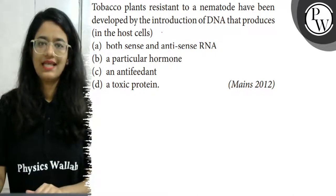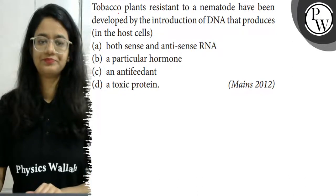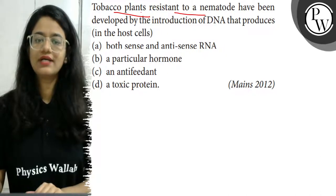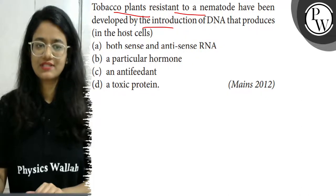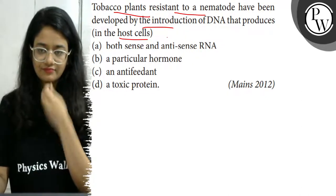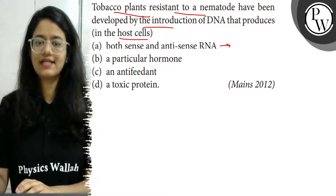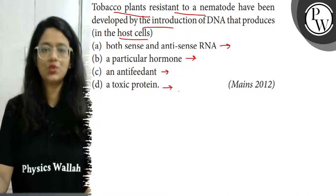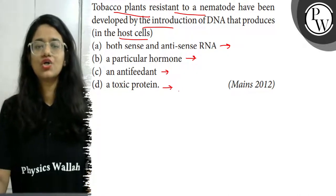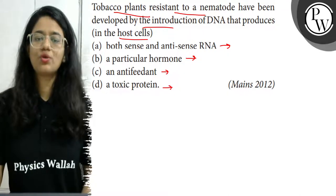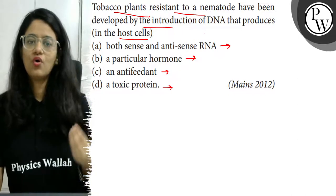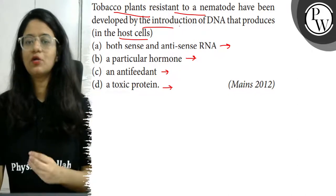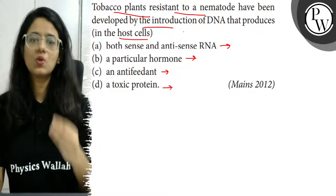Hello students, let's see this question. Tobacco plants resistant to a nematode have been developed by the introduction of DNA that produces in the host cells. The options are: A) both sense and anti-sense RNA, B) a particular hormone, C) anti-feedant, and D) toxic protein. The question asks what the introduced DNA produces in the host cells.